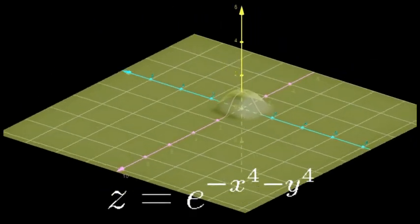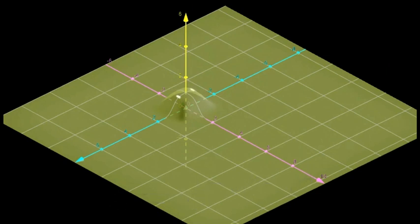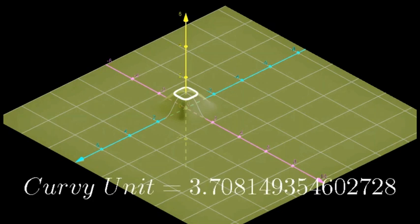If we instead took the equation of e to the negative x to the fourth minus y to the fourth, you can't simplify this in terms of r, so you cannot draw a circle at any point. Instead, it creates this weird shape that I'm going to call a curvy square. The unit curvy square has an area of 3.708149354. I'll call that the curvy square constant.